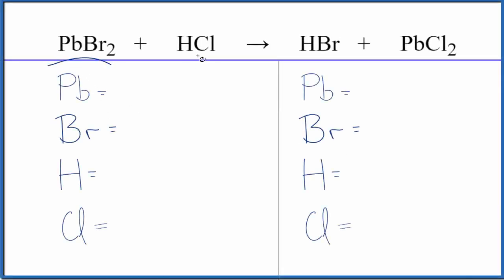Let's balance the equation PbBr2 plus HCl. This is lead dibromide and hydrochloric acid. We'll also look at the type of reaction here.